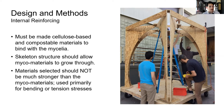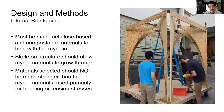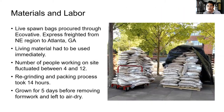We wanted it to be cellulose because we actually want the mycelia to bind to that reinforcing structure, and the skeleton structure should allow the mycomaterials to grow through. Because it was experimental, we were realizing things as we were going. Materials selected for internal reinforcing should not be much stronger than the mycomaterials themselves. There is a problem when, because of the rigidity of this internal structure, it actually caused unpredicted damage to the structure later.